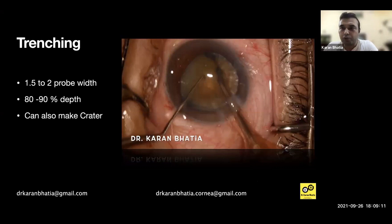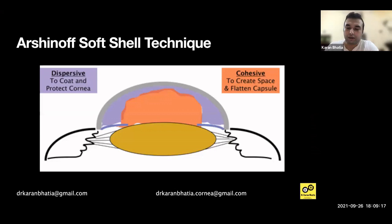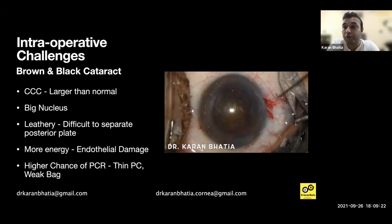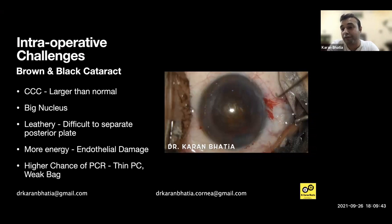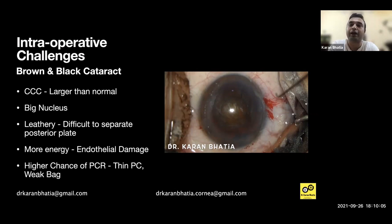Intraoperative challenges include: the CCC should be a little larger than normal — more than 5.5, ideally more than 6 mm; about 6.5 is fine. The nucleus is quite big, making it difficult to manipulate. The leathery nature makes posterior plate separation difficult. You will be using a lot of energy, so be careful not to cause endothelial damage — try to minimize FACO in the anterior chamber. FACO should be in the bag or iris plane. Do not do too much lateral separation, as the posterior capsule is very thin.